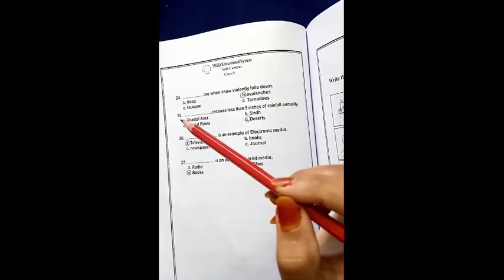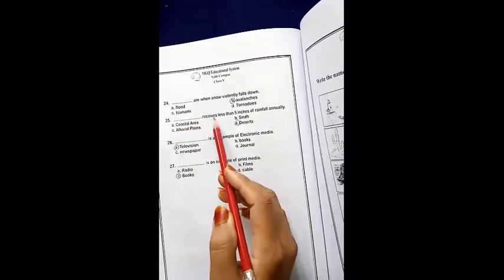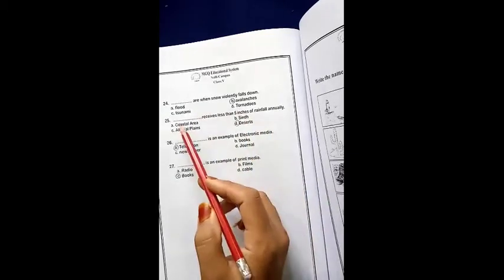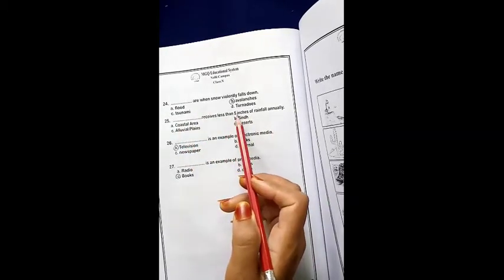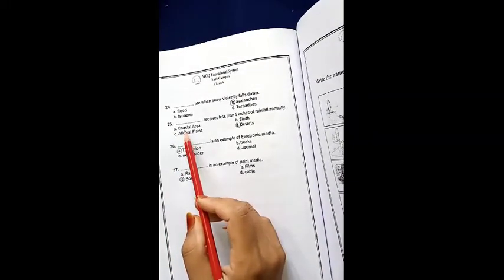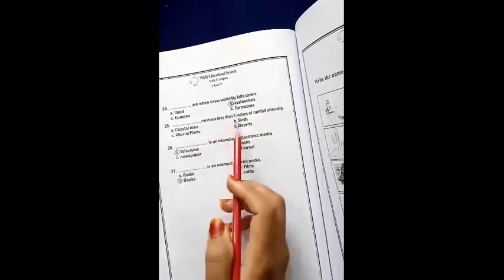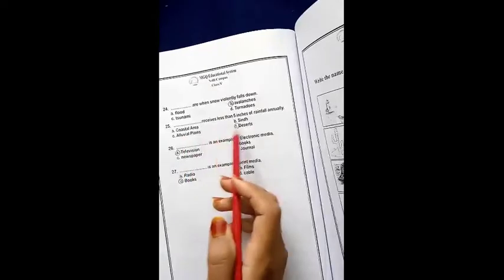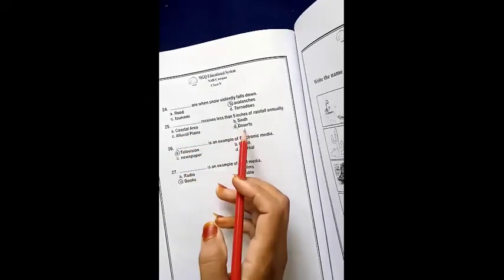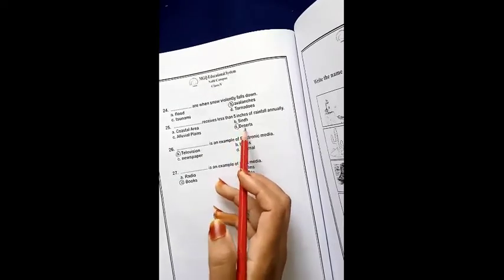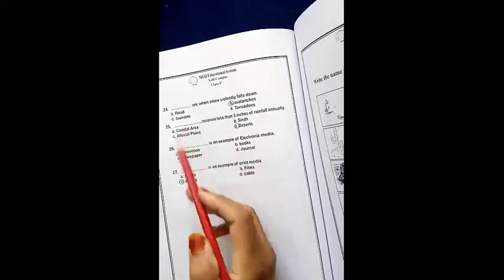Next, MCQ 25. Dash receive less than 5 inches of rainfall annually. A, coastal area. B, Sand. C, Alluvial plain. D, Desert. Coastal area, Sand, Alluvial plain, Desert. It is the right option. We have D. We have D in the circle and we have desert to write.